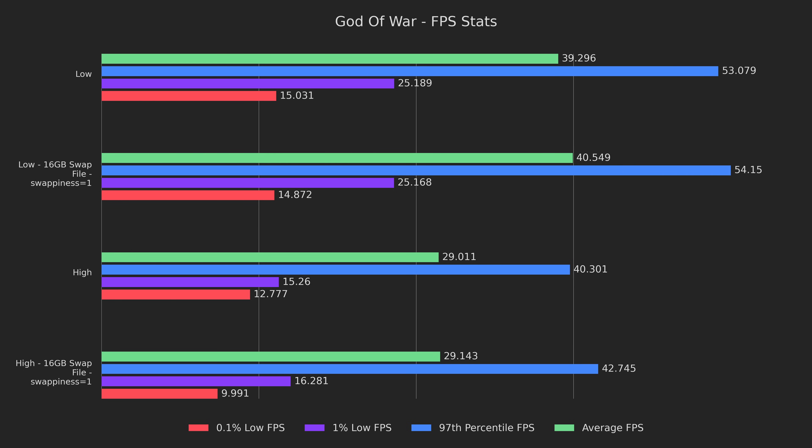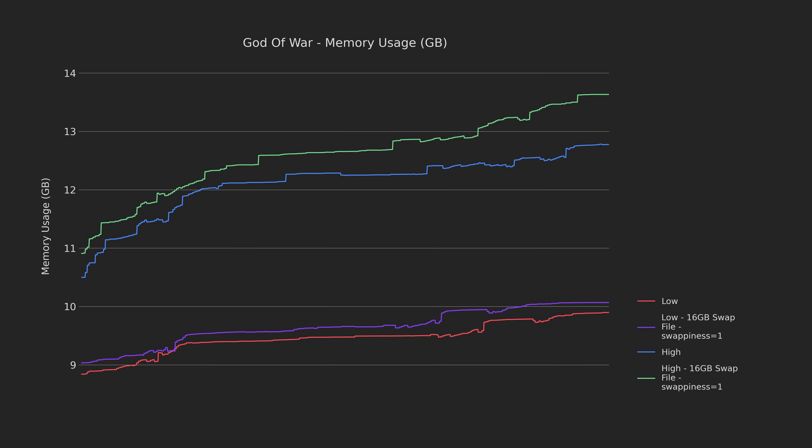Next I tried testing the swap fixes in isolation, setting the swap file to 16 gigabytes and the swappiness to 1 using Cryo Utilities. First, I wanted to see if it affected performance at all, and it did. The low preset was within margin of error, but the high preset took a 28% hit to the 0.1% lows. Next, I wanted to check if the crashing was fixed, and the good news is that it was. I can confidently say that I haven't experienced a crash since implementing the swap fixes.